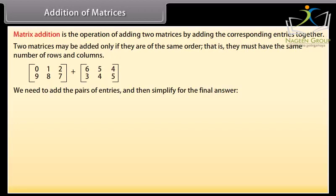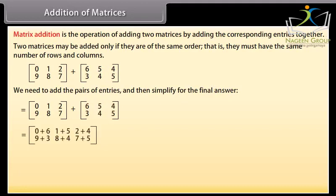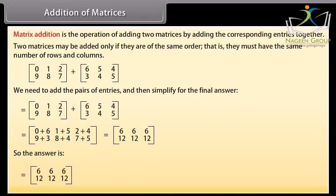Let's add these matrices. We need to add the pairs of entries and then simplify for the final answer. Row-wise 1st row 0, 1, 2, 2nd row 9, 8, 7 plus row-wise 1st row 6, 5, 4, 2nd row 3, 4, 5. Row-wise 1st row 0 plus 6, 1 plus 5, 2 plus 4, 2nd row 9 plus 3, 8 plus 4, 7 plus 5, is equal to row-wise 1st row 6, 6, 6, 2nd row 12, 12, 12. So the answer is row-wise 1st row 6, 6, 6, 2nd row 12, 12, 12.